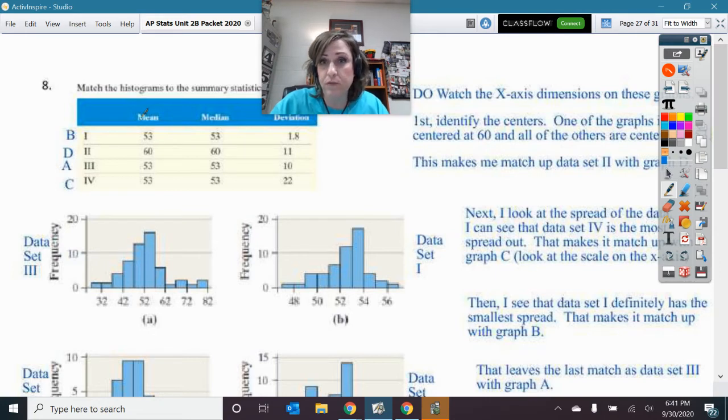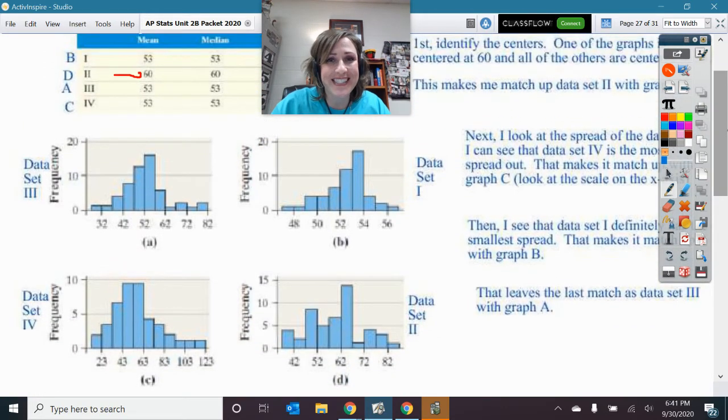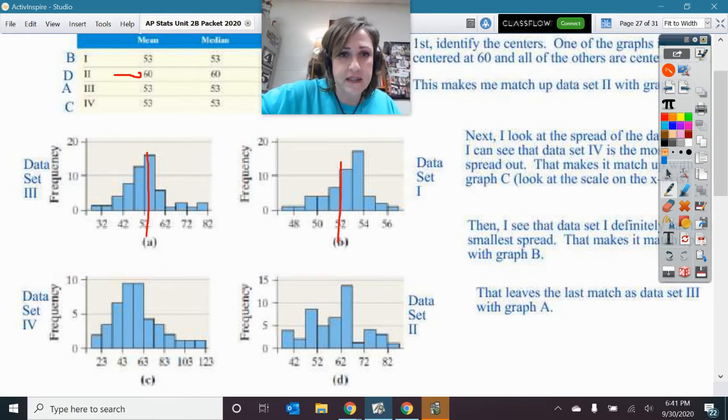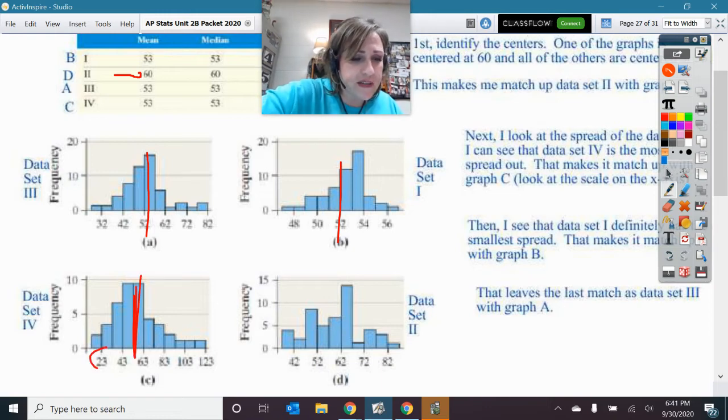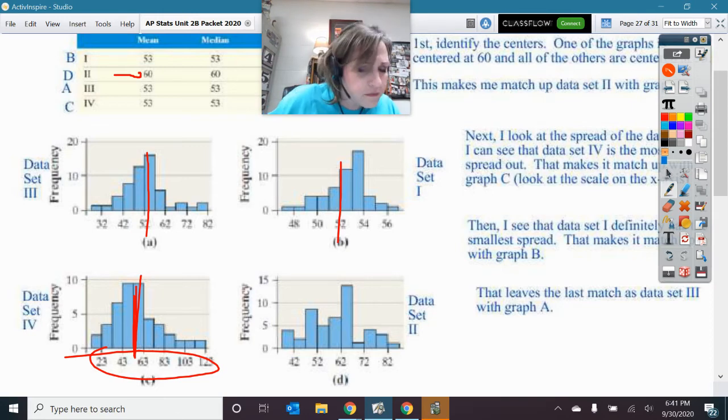All right. So first thing you should do is let's take a look at this, where they are centered. So see here, I've got, I see the mean and the medians are the same. So they're fairly symmetric. And what do you notice about these means and medians? What I notice is that one of them is somewhere else. So one of these is centered at 60 instead of being centered at 53. So I'm going to come down here. That's the first thing I look at. Find the one that is centered at 60 instead of 53. That is not true.